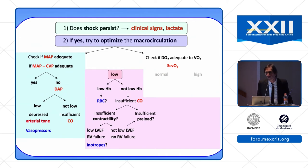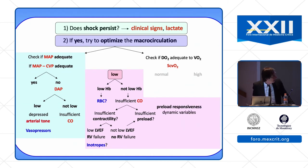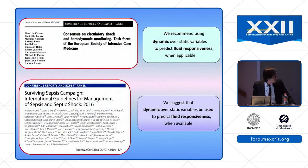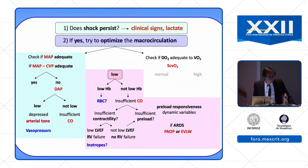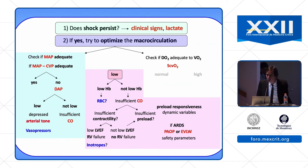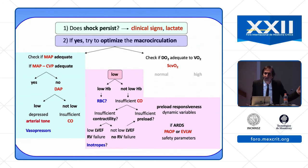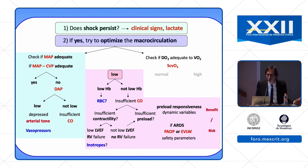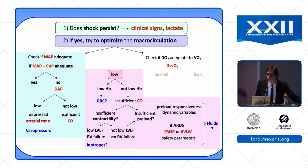Use dynamic preload variables to assess fluid responsiveness — this is the numerator of the benefit-risk ratio of fluid infusion. The denominator, especially in case of ARDS, is either PAOP if you use the PA catheter, or extravascular lung water if you use a transpulmonary thermodilution system, as safety parameters. You can easily assess the benefit-risk ratio of fluid infusion and make the decision to give fluid or not.